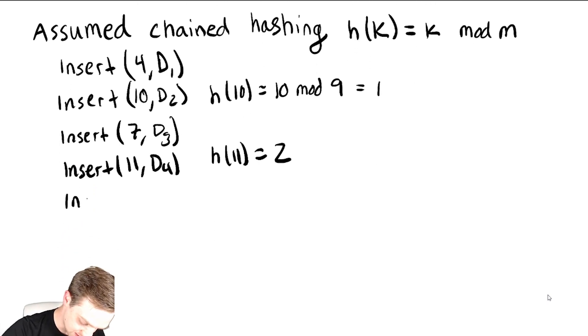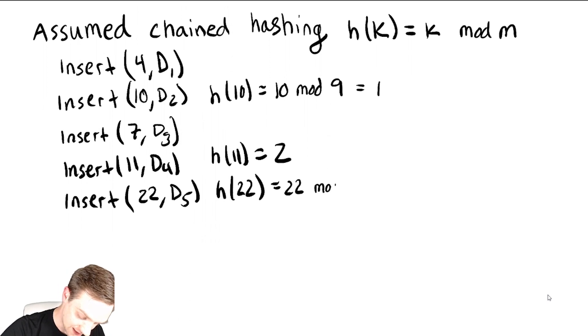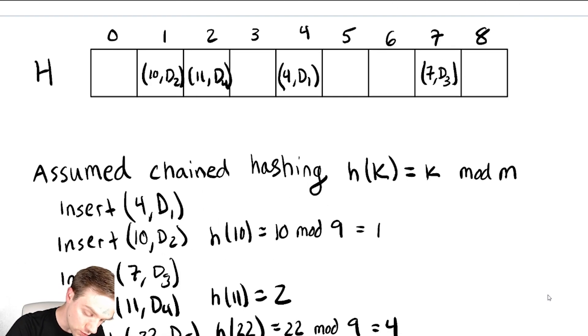Now let's suppose that next we did an insert of 22, d5. This is going to need to compute h of 22, which is 22 mod 9. The remainder when I divide by 9 of 22 will give me 4. So now if we look, oh no, we get a collision over here at entry 4, because we already have it occupied. And with chained hashing, what we're going to do is we're going to append this element, 22, d5, onto the linked list at that location.